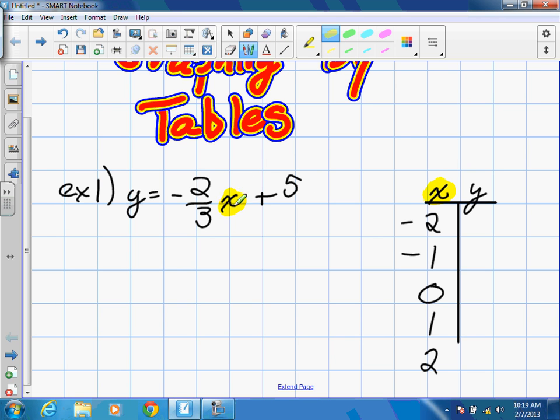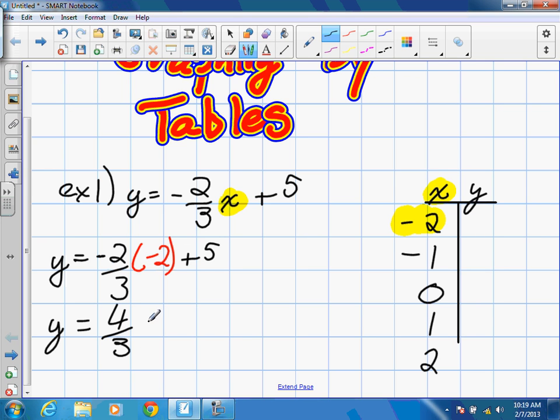So, for x in this equation, the very first step is we're going to plug in negative 2. So, y is equal to negative 2 over 3 times negative 2. We just replaced x with it, plus 5. Now we've got to remember our fraction rules. I have two negatives times each other, so this is going to be a positive answer. I'm going to have positive 4 over 3.